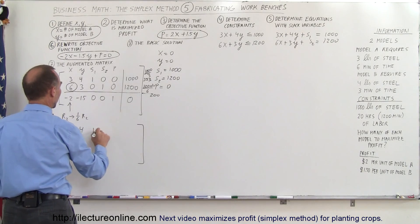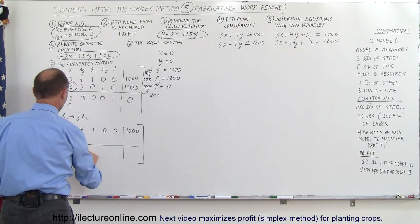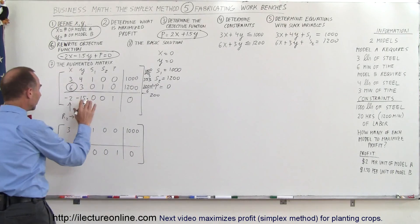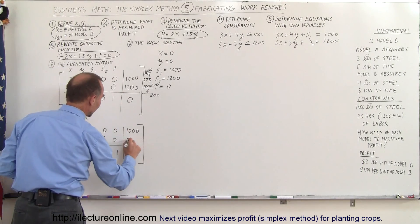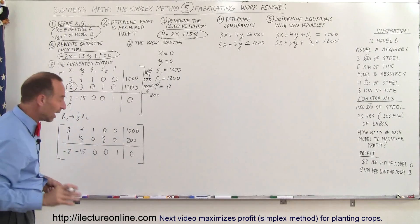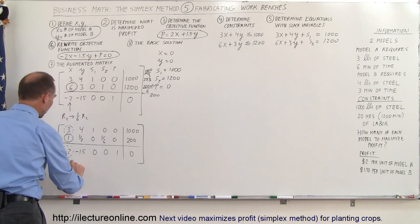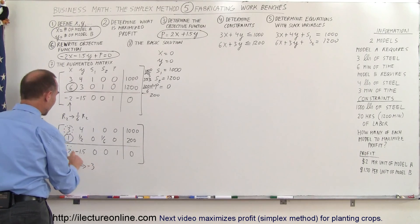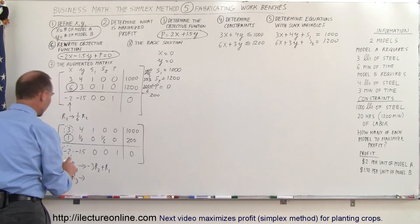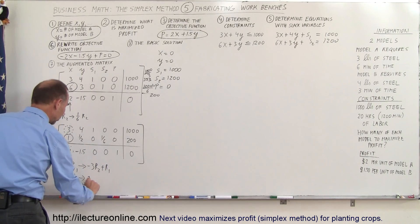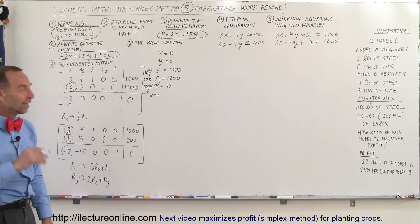After multiplying row 2 by one-sixth, row 1 stays as 3, 4, 1, 0, 0, 1000 and row 3 stays as minus 2, minus 1.5, 0, 0, 1, 0. Row 2 becomes: 1, 1/2, 0, 1/6, 0, 200. Now we pivot around that 1 to eliminate the 3 in row 1 and the negative 2 in row 3. We replace row 1 with negative 3 times R2 plus R1, and row 3 with positive 2 times R2 plus R3.